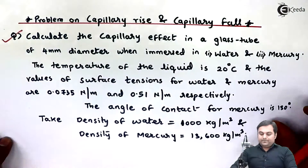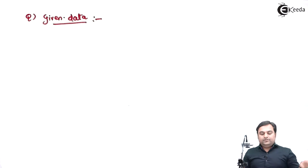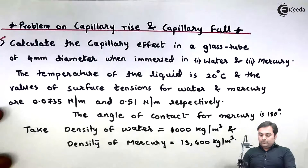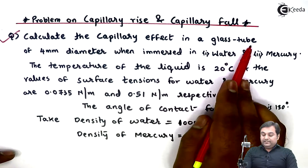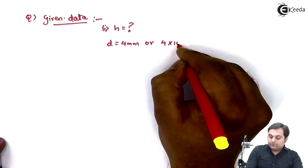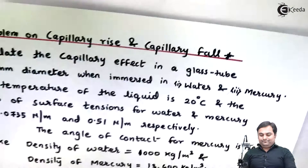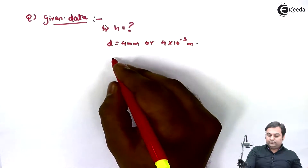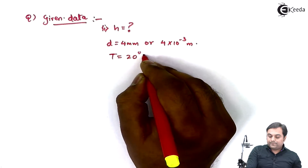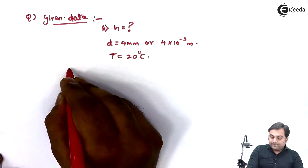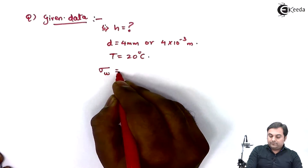I will write the given data. Capillary effect is the height of rise or fall of the liquid. The diameter of the glass tube is 4 mm, or 4 × 10⁻³ meters, when immersed in water and mercury. Temperature T is 20 degrees Celsius. The surface tension values are given — for water, sigma is 0.0735 Newton per meter.